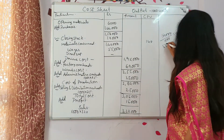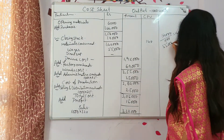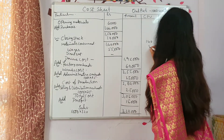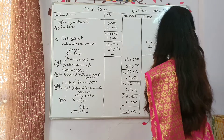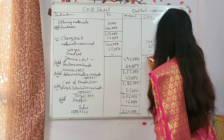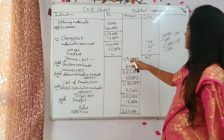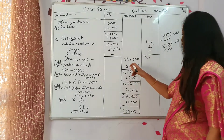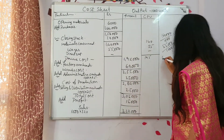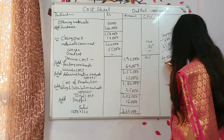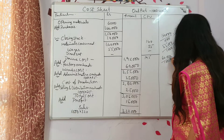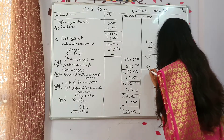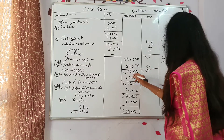Wages 55,000 divided by 1000 — you will get 55. Direct expenses: nil. Then you will get the total of 195, or if you have done 1,95,000 divided by 1000 units you can verify. Factory overheads: 60,000 divided by 1000 units — you will get 60. Then the total: 255.